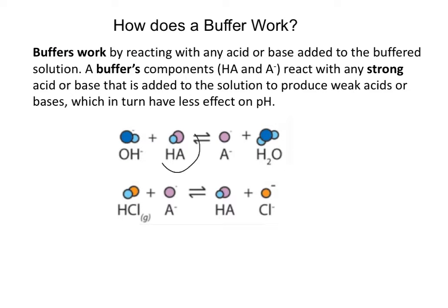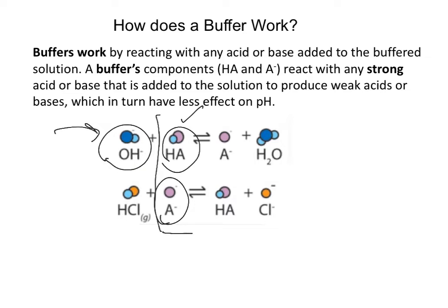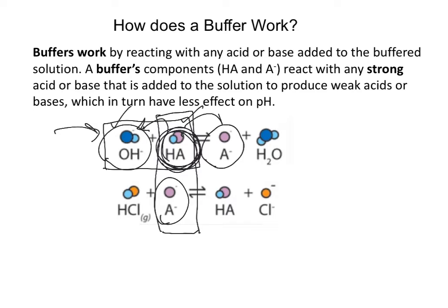If the buffer consists of a weak acid and its conjugate base and we add a basic contaminant like hydroxide, the weak acid component springs into action. When the weak acid reacts with the contaminant base, you make the conjugate base of the weak acid and water. You've eliminated the contaminant and made a little more of one buffer component, converting a strong base into a weak base, which has less effect on pH.